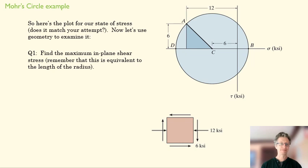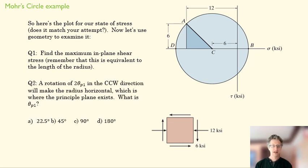We're back. Now we want to know how much we have to rotate this to find our principal planes. One of our principal planes is going to be at CD. So how much do we have to rotate CA to get to CD? And remember it's a rotation of 2 theta. What is theta P1 if 2 theta P1 rotates enough to make this line horizontal? Go ahead and pause, go ahead and solve that.